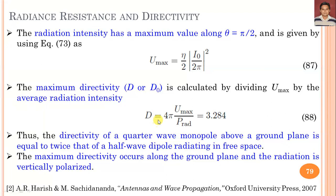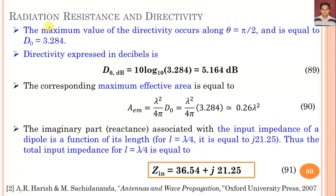For vertically polarized monopole antennas, the electric and magnetic field equations are found using image theory. Directivity at maximum (θ = π/2) is D₀ = 3.284, which in dB equals 5.164 dB. This is higher than both the infinitesimal small dipole and the half-wavelength dipole. Thus, the monopole antenna has higher directivity compared to other wire antennas.